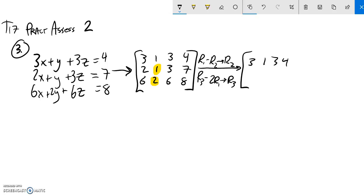So three, one, three, four. And I'll get my new matrix, row one minus row two. So three minus two is one, one minus one is zero, three minus three is also zero, four minus seven is negative three. Cool, all right, next one.